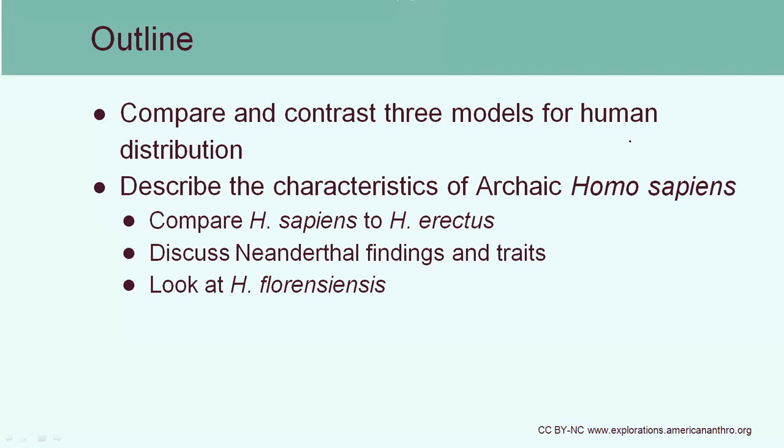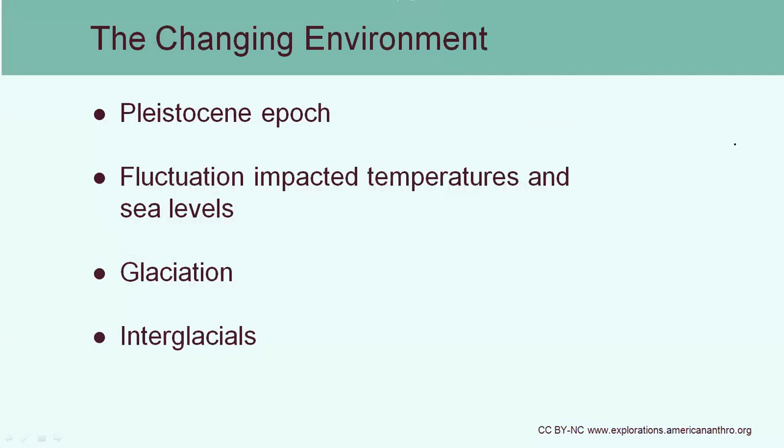There was a changing environment going on at this time, and because of changes in temperature there are going to be changes in sea levels. This allows more migration to occur because there's less separating the continents from each other. We also see changes in food sources and shelter, which put pressure on these groups of animals to migrate to wherever they can find food.